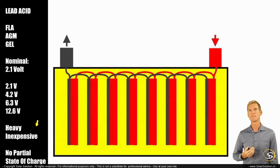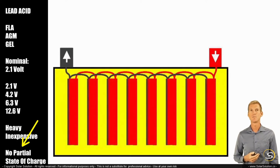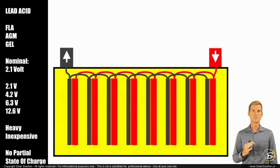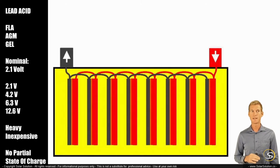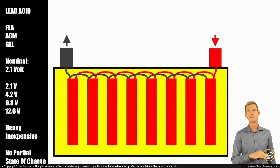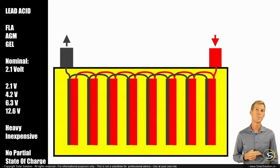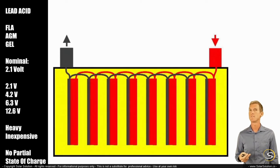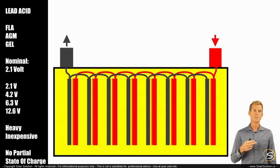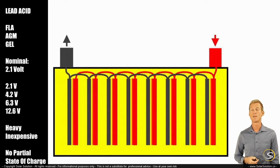A significant disadvantage of lead-acid-based batteries is that they do not allow a partial state of charge over a prolonged amount of time — it can be days or weeks depending on the chemistry. They do not like you to discharge the battery and then let it sit in a partially discharged state. If you leave it for a prolonged time, you cannot fully reverse the electrochemical reaction anymore, which affects the lifetime and capacity of the battery. In general, lead batteries don't like partial state of charge for a prolonged amount of time.